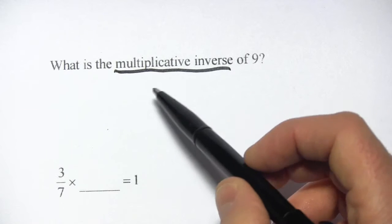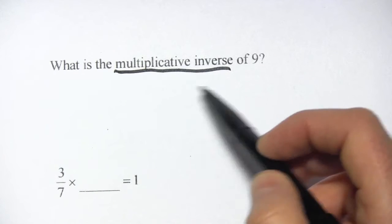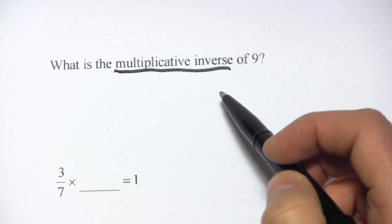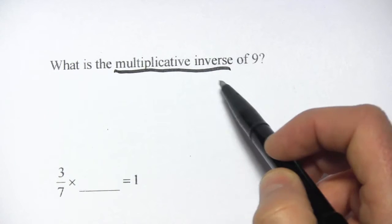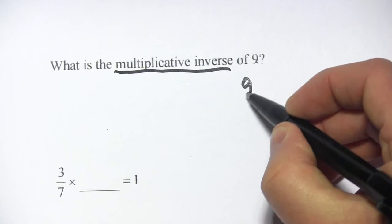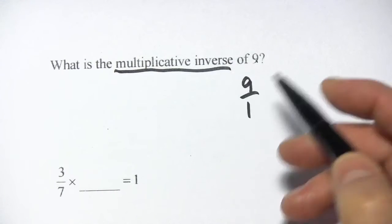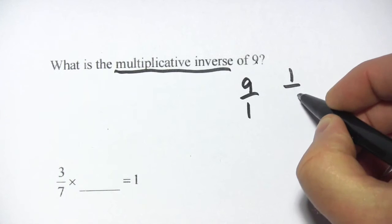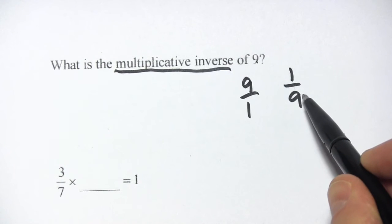Multiplicative inverse, what this means is that if you multiply a number and its reciprocal, it comes out to the number 1. And that's kind of a cool thing to know in math. So 9 is 9 over 1, its multiplicative inverse is 1 over 9. So that's our answer for this problem.